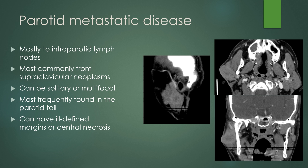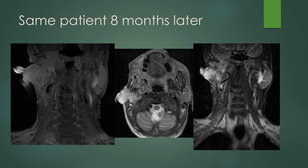Metastatic disease to the parotid gland is mostly to the intraparotid lymph nodes and most commonly from supraclavicular neoplasms such as cutaneous squamous cell carcinomas of the scalp. They can be solitary or multifocal, most frequently found in the parotid tail. Like other malignancies, they can have ill-defined margins and areas of central necrosis. Here you see this infiltrative mass within the parotid gland with central necrosis, no well-defined margins, and it is tenting the skin of the cheek with no clear separation from the dermis. The same patient eight months later on MRI shows this infiltrative mass filling the parotid gland with irregular enhancement and hyperintensity on T2.